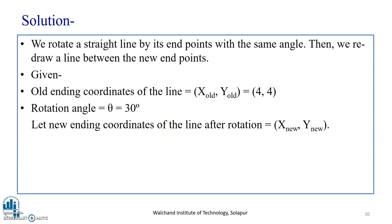The solution here is, we rotate a straight line by its endpoints with the same angle. Then we redraw a line between the new endpoints. Given all ending coordinates of the line are X-old and Y-old, that is 0, 0 and 4, 4, we have directly taken 4, 4. The rotation angle theta is equal to 30 degrees. We have to find out this line segment after rotating it with 30 degree angle.